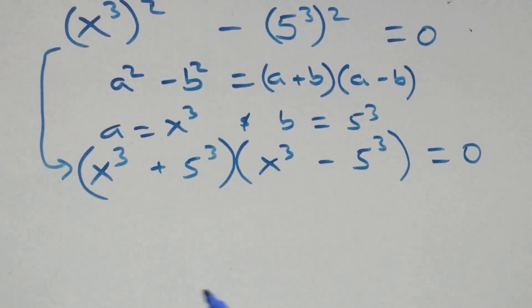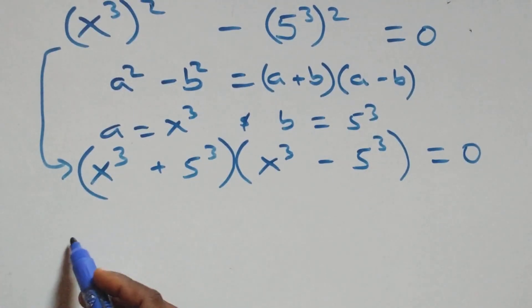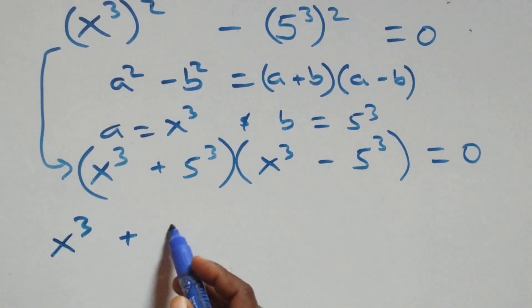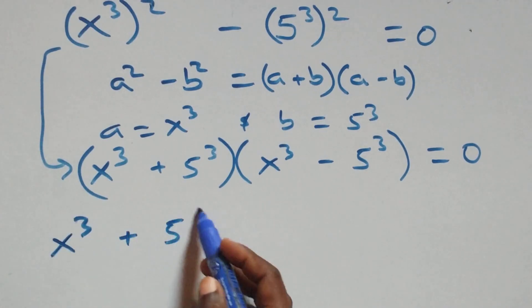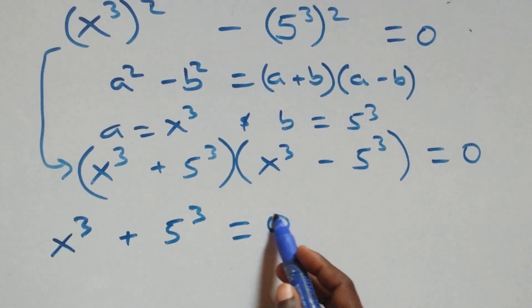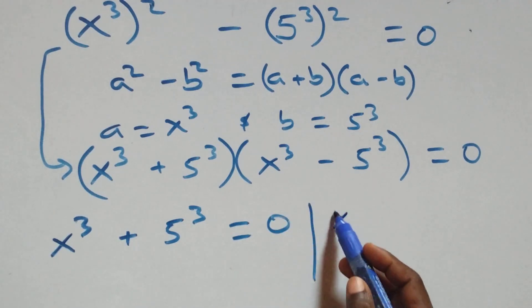At this point we have two possible cases: x raised to power 3 plus 5 raised to power 3 equals to 0, or x raised to power 3 minus 5 raised to power 3 equals to 0.